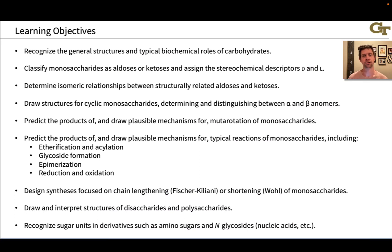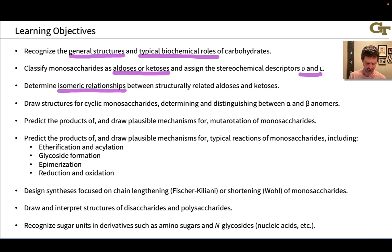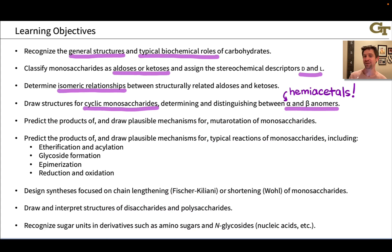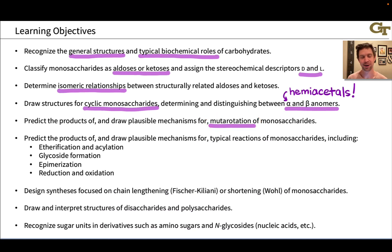Then we'll learn all about the cyclization of sugars, which is absolutely key. Most structures, if you look up carbohydrates online, you will see cyclic structures. We'll learn how to draw the structures of cyclic monosaccharides and how these come about. An important point is that these are hemiacetals. The so-called anomers of a cyclic sugar, which differ in configuration at one key stereocenter, are hemiacetals differing in configuration at the hemiacetal carbon that has an OH group and an OR group. We'll see how the two anomers can interconvert through a mechanism known as mutarotation, and why the word rotation comes into this.